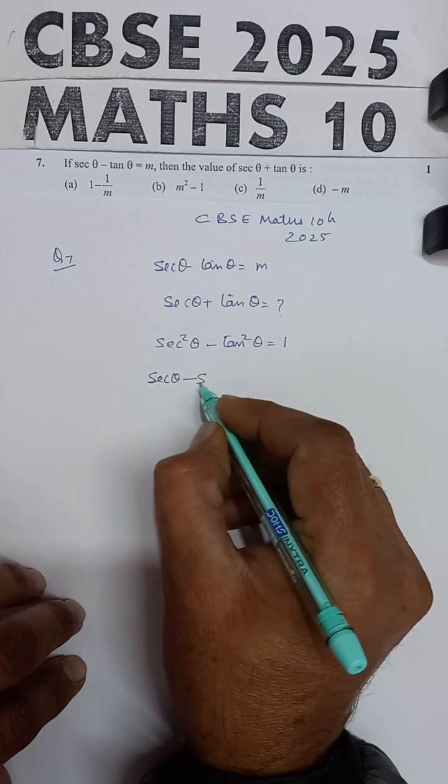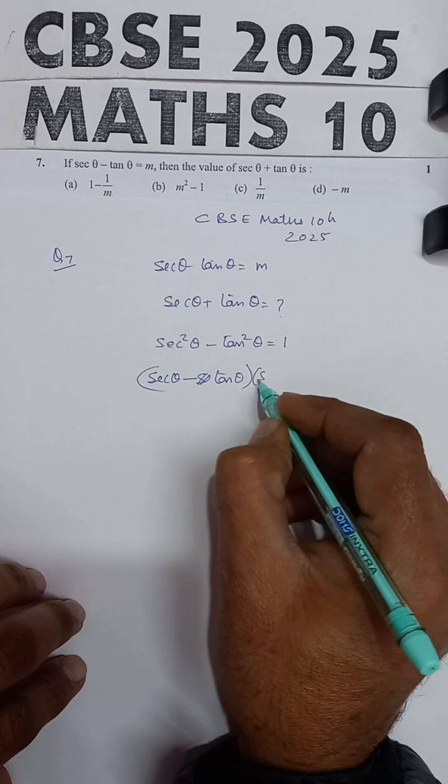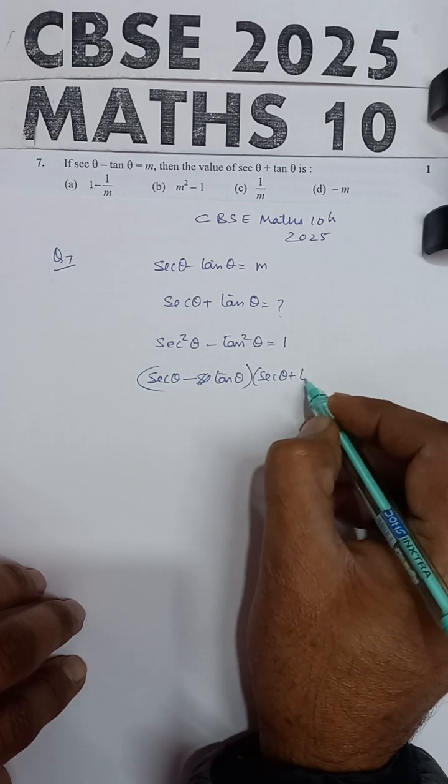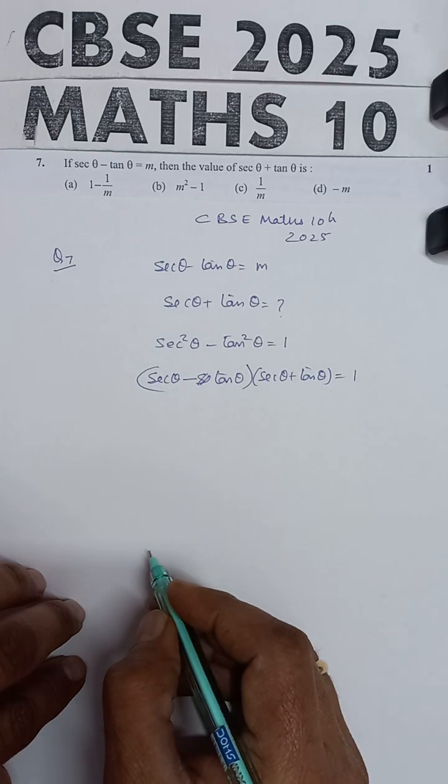x square minus y square is x minus y into x plus y. And now this on the right hand side you are having, this value equal to 1.